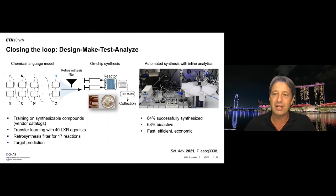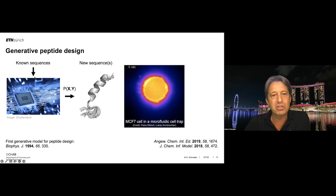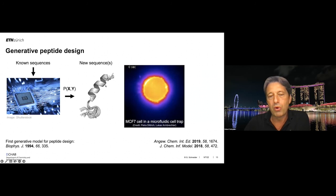Finally, this whole idea can also be used for peptide and protein design. We train machine learning systems with known peptide sequences and sample new sequences. Here is an NMR structure we solved of one such compound — we were aiming to find anti-cancer peptides, and indeed this compound selectively kills cancer cells by destroying cancer cell membranes.